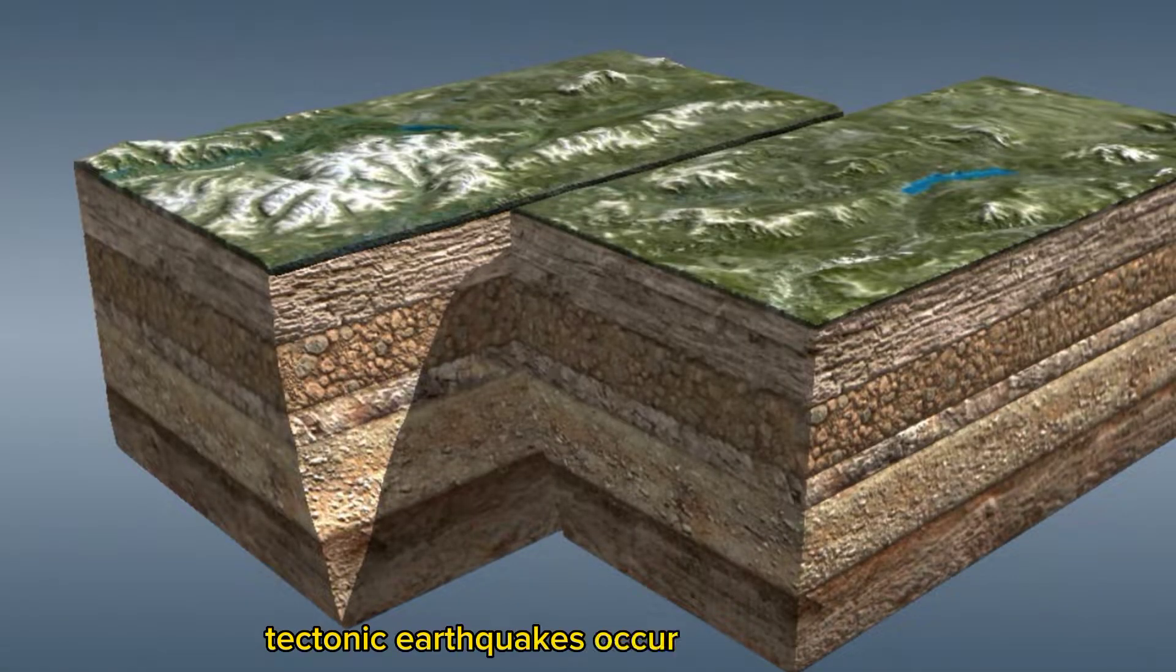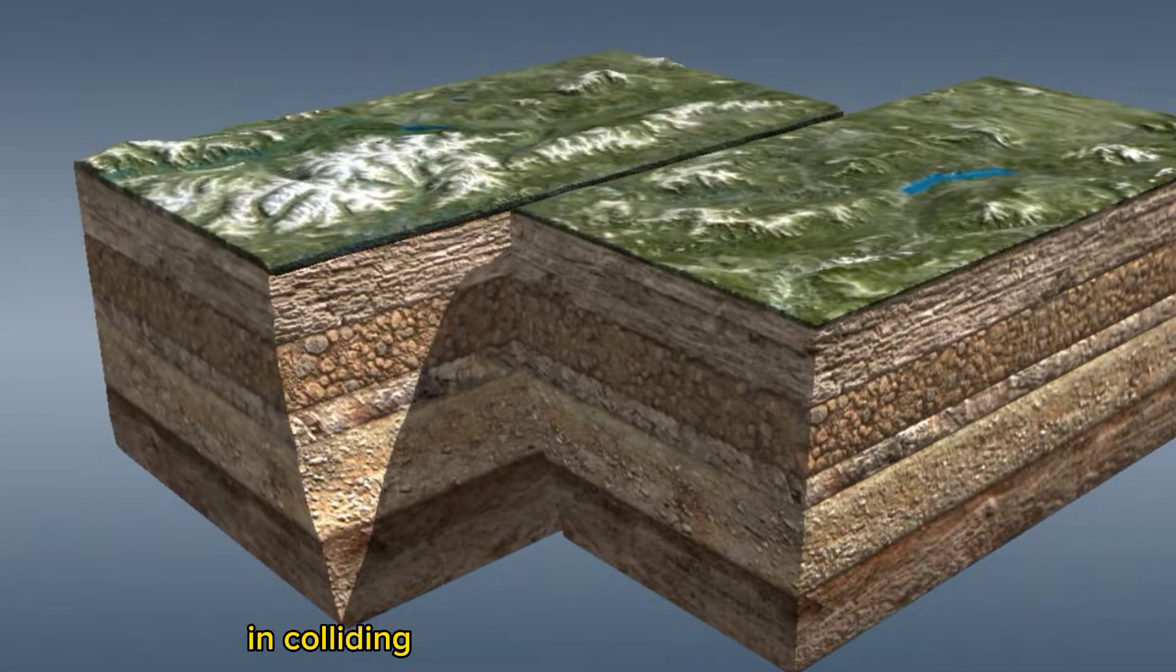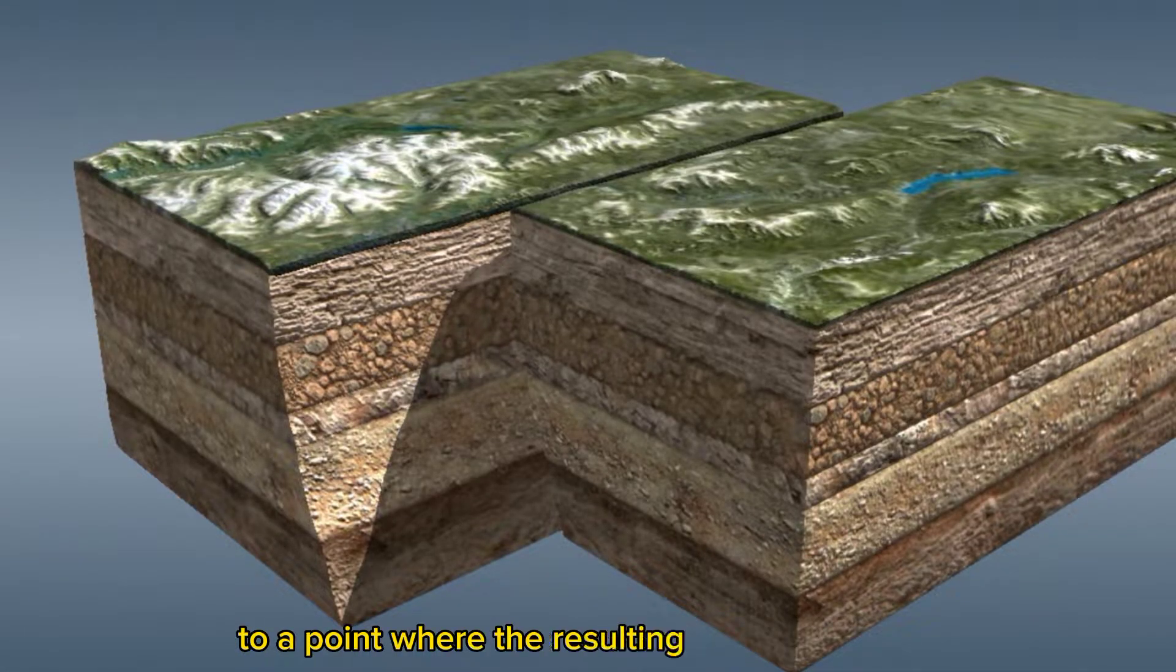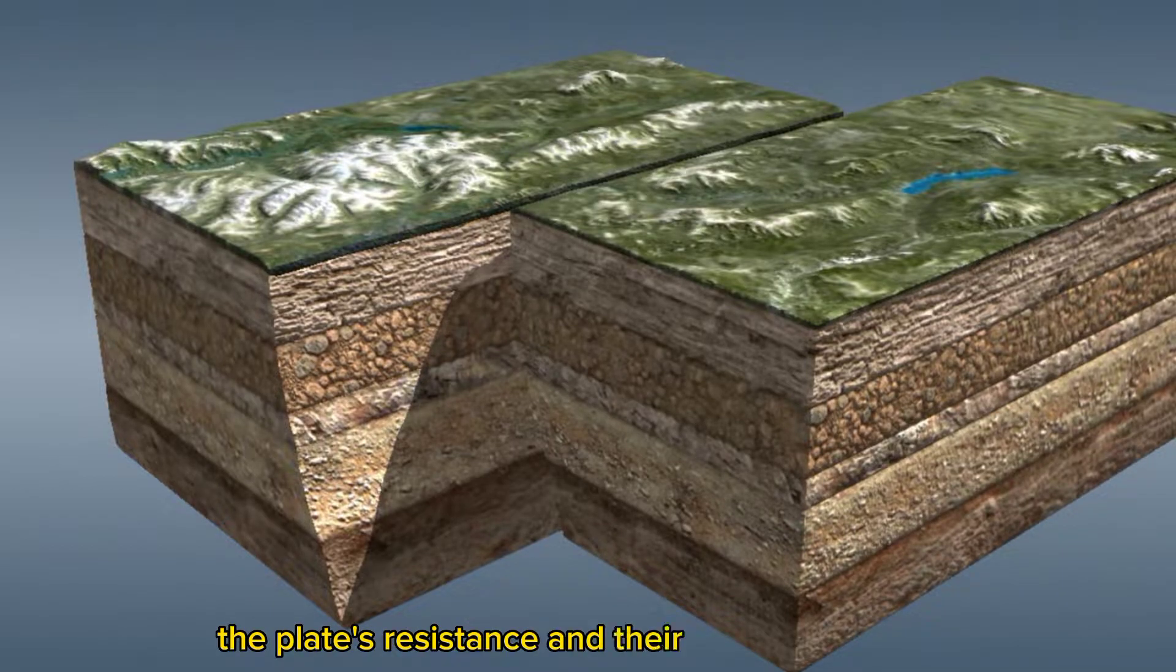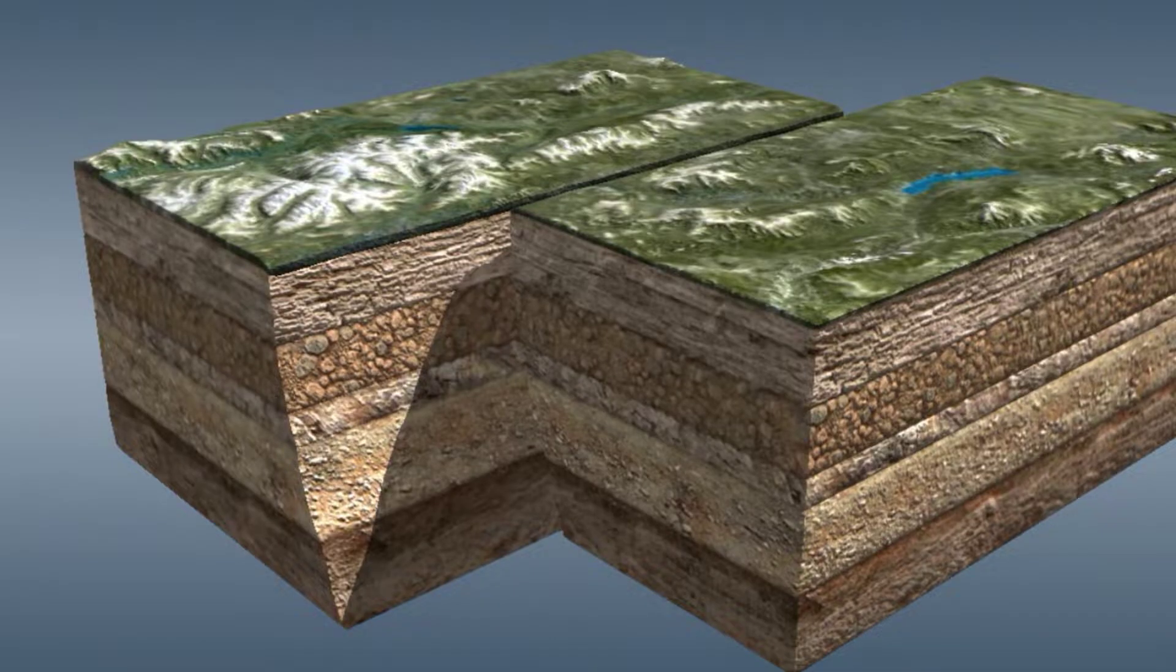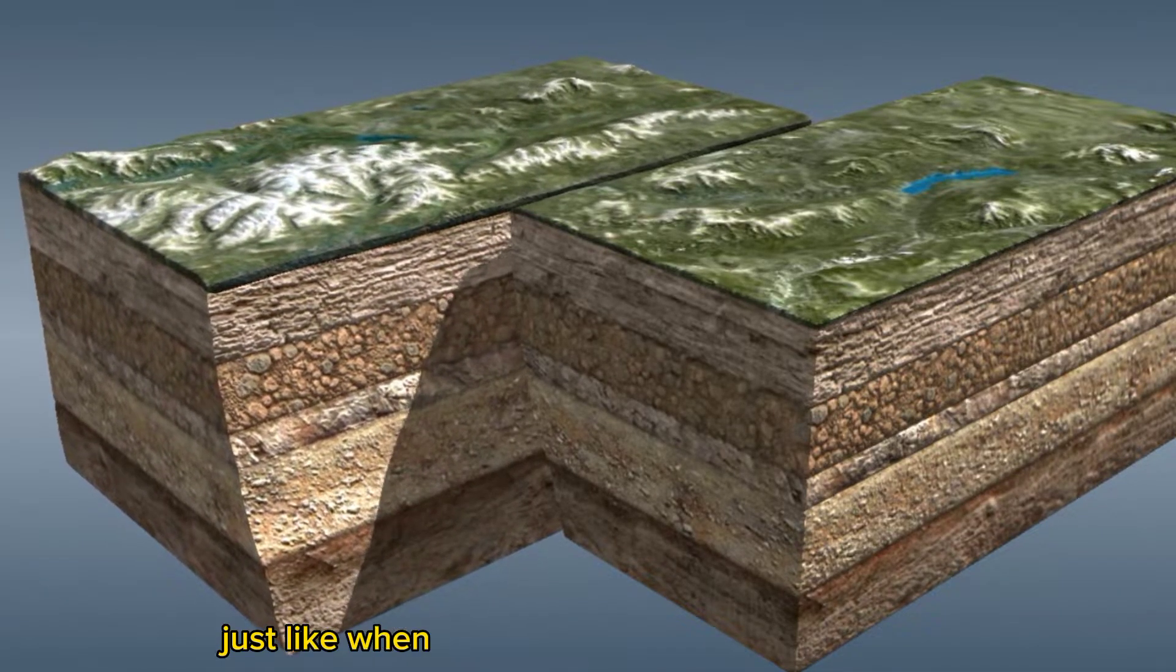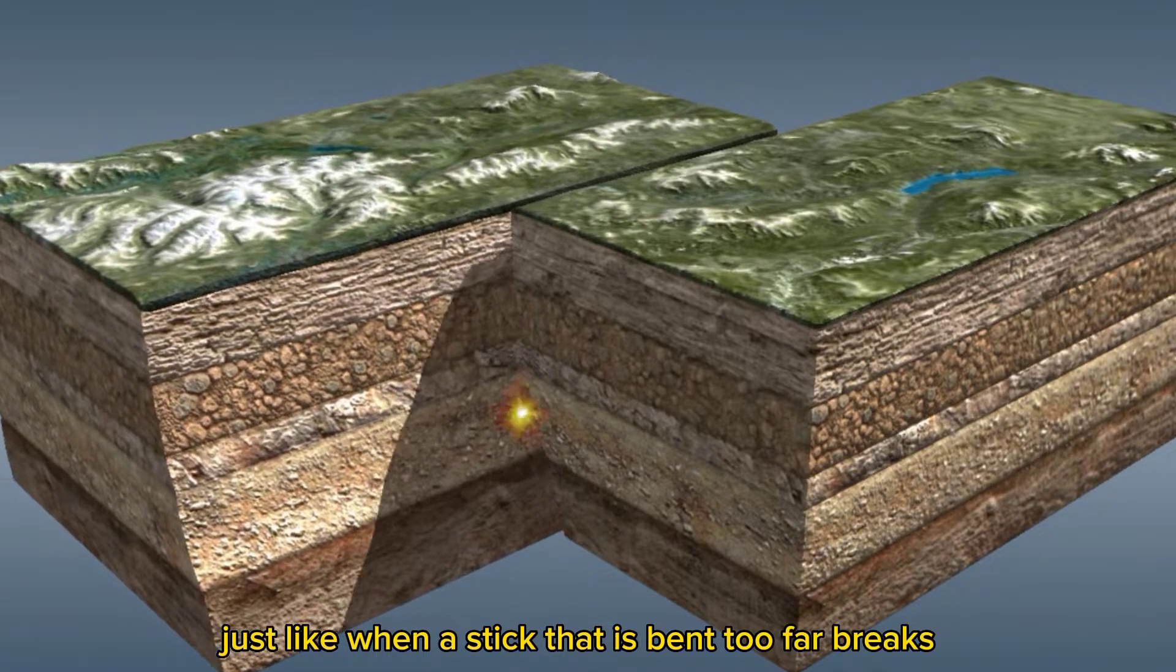Tectonic earthquakes occur when tension in colliding tectonic plates has accumulated to a point where the resulting stress exceeds the plate's resistance and their ability to deform. The tension is released suddenly, just like when a stick that is bent too far breaks.